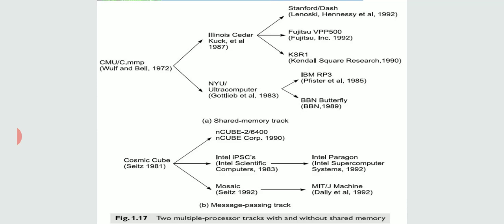The next track is the non-shared memory or message passing track. Here we are not using shared memory or interconnecting networks for inter-processor communication. Instead, a message passing network is used — processors will talk to each other through messages if they want to share data or instructions. Each processor has its own memory; they pass messages first and then deal with the data or instruction.